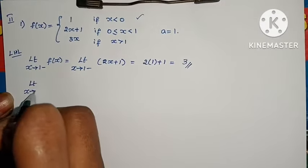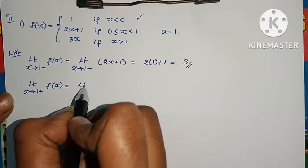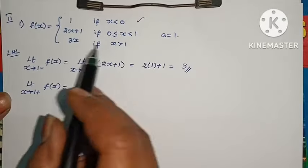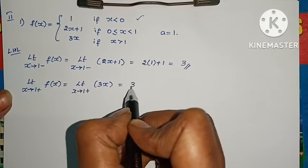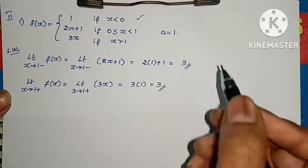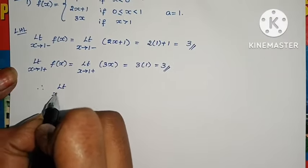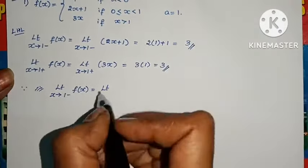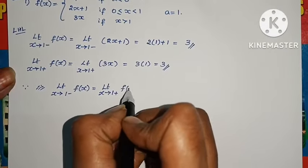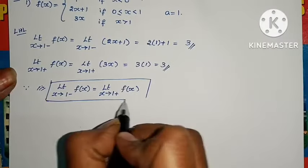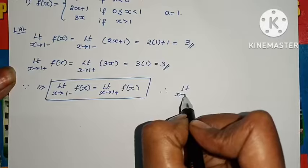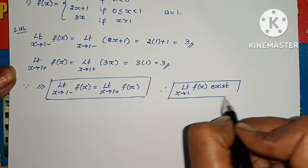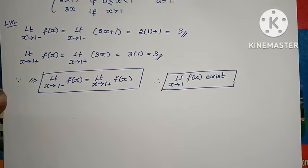Limit x tends to 1 plus f(x): here 1 plus means x greater than 1, and the f(x) value is 3x. So 3 into 1 equals 3. Now both values are equal. Therefore, since limit x tends to 1 minus f(x) equals limit x tends to 1 plus f(x), therefore limit x tends to 1 of f(x) exists.